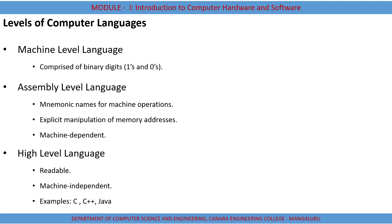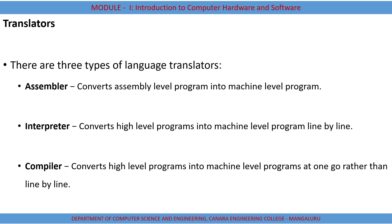Now we will look at translators. Since we have three types of programming languages, there needs to be a system that converts the programming language to machine equivalent, because the machine can only understand machine language. If you write a program in assembly level or high level language, we need translators to convert it to machine equivalent. The first translator is the assembler.